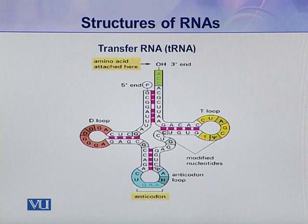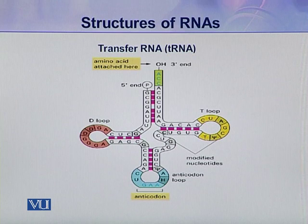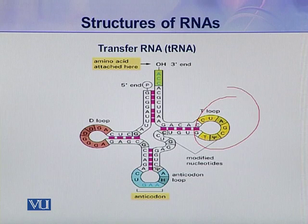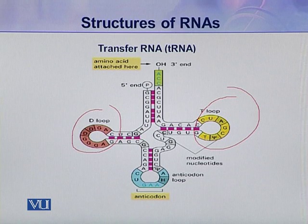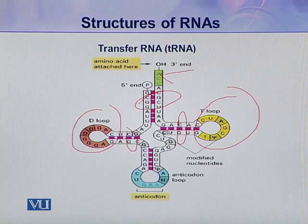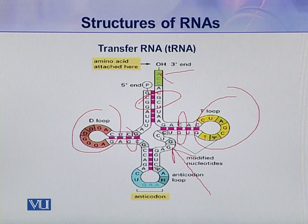Here you can see the structure of transfer RNA. This is the secondary structure assumed by a molecule of tRNA. In this structure, you can see there are a number of loops, and these are hairpin loops. At a number of points, it is double stranded, and at some points it is single stranded. It also contains a bulge. So this is the secondary structure of a tRNA molecule.